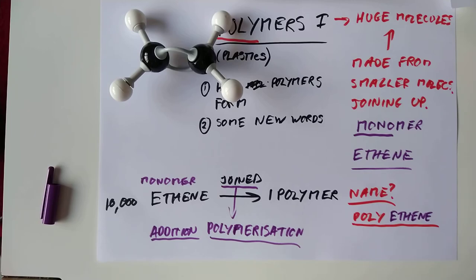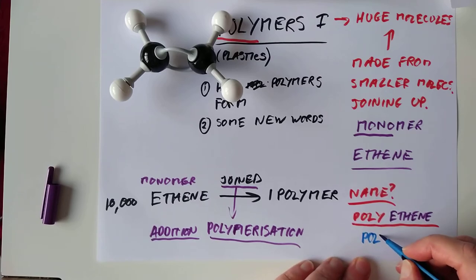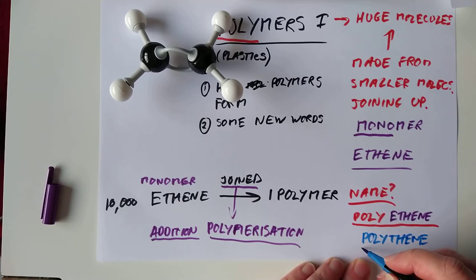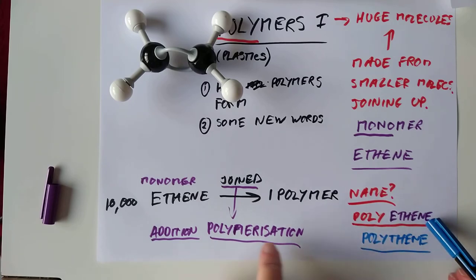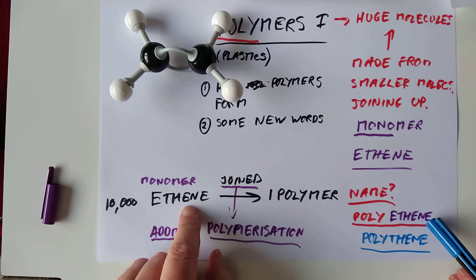Now, you're probably thinking, that sounds vaguely familiar. Yeah, that's because we tend to drop the middle eth, and we tend to just call it polythene. Because it rolls off the tongue easier. But the proper name for polythene is polyethene. And that's because the polythene contains many, many ethenes all joined together.